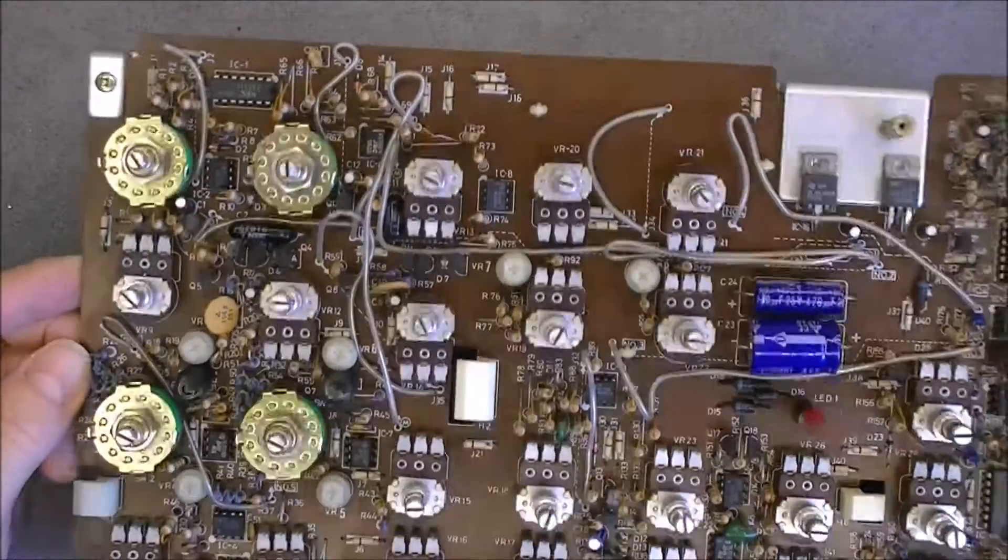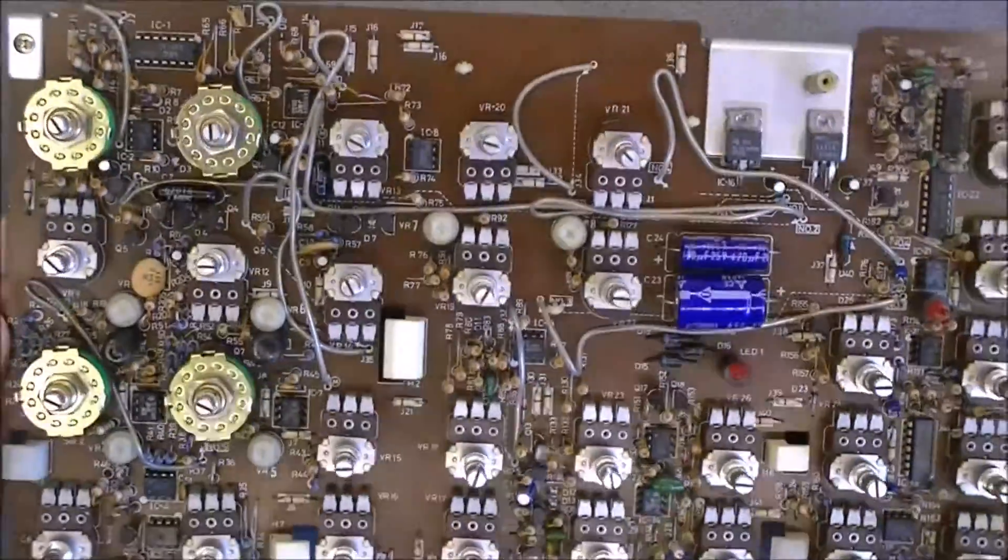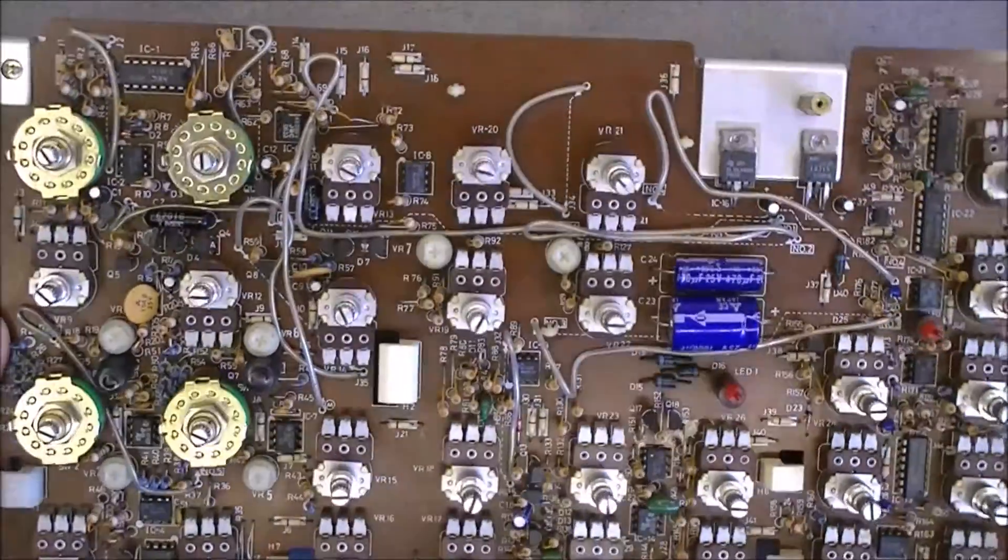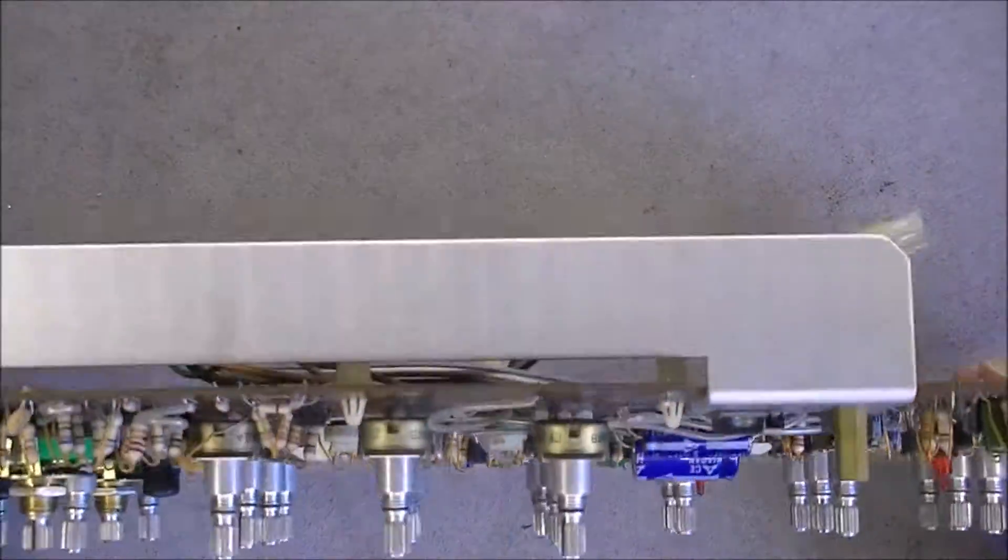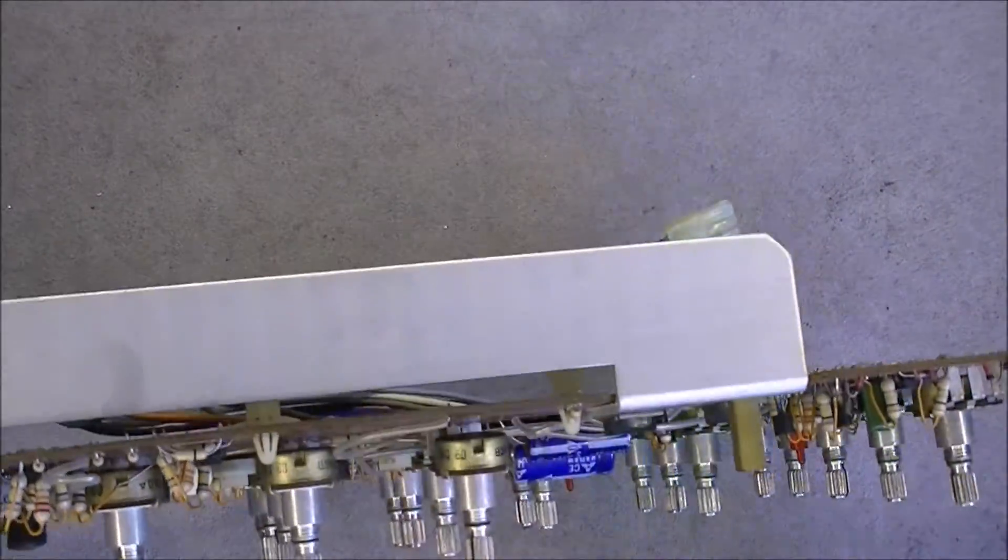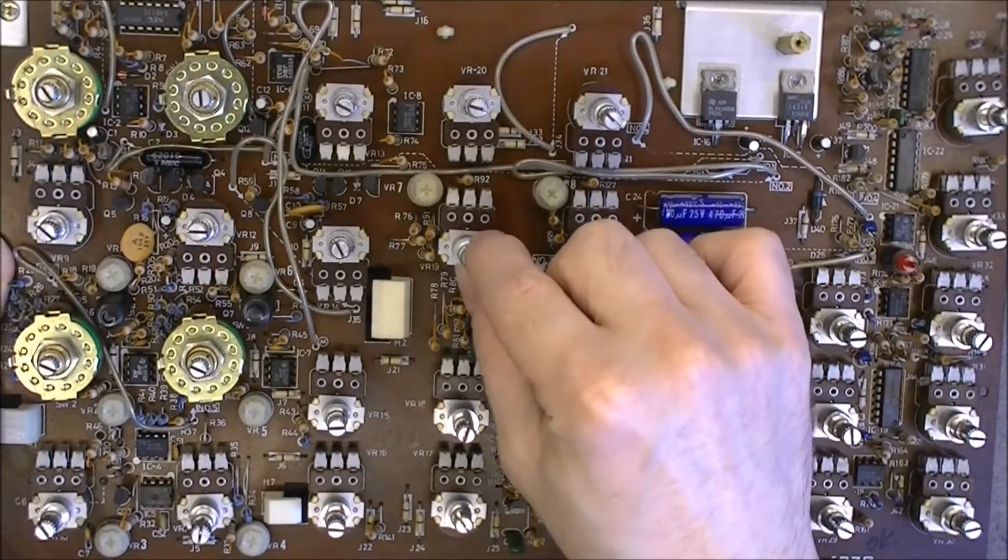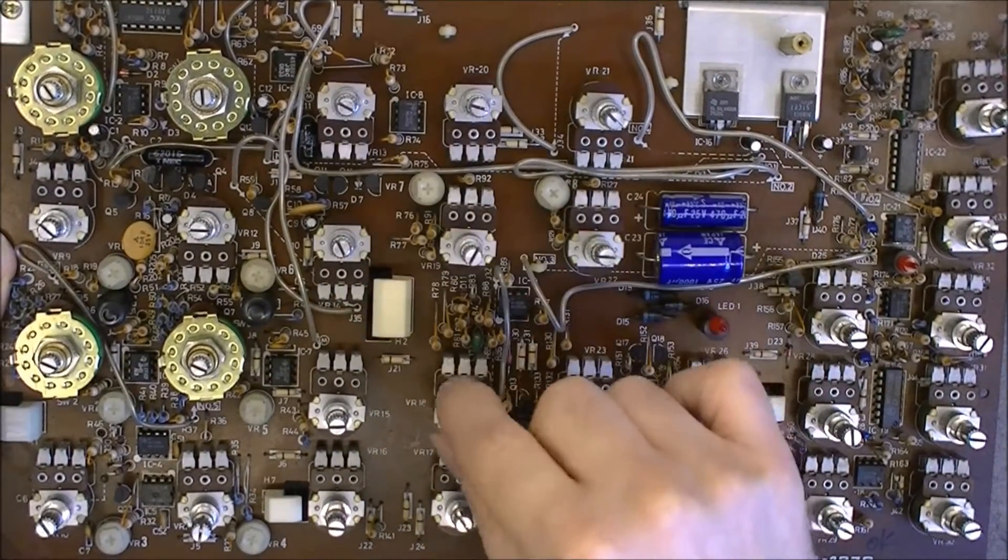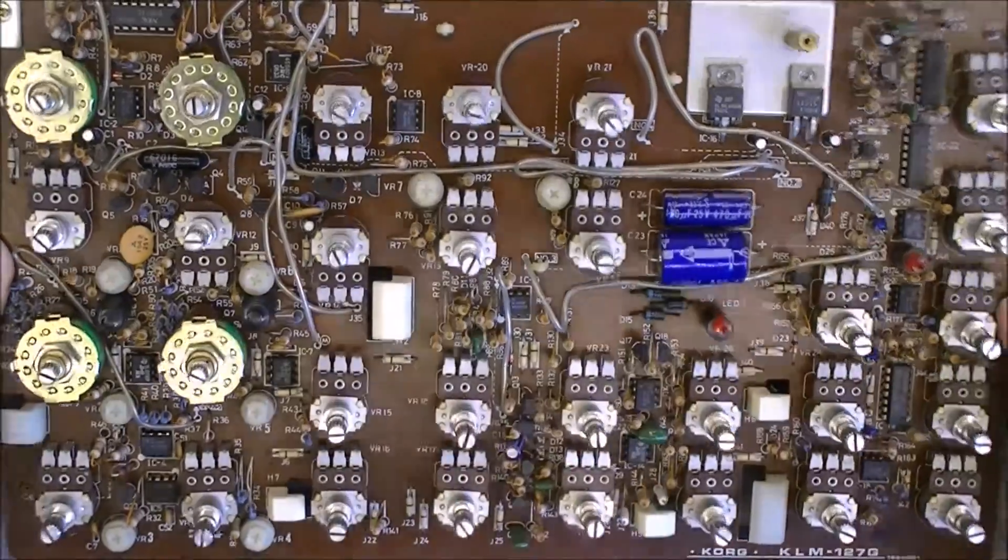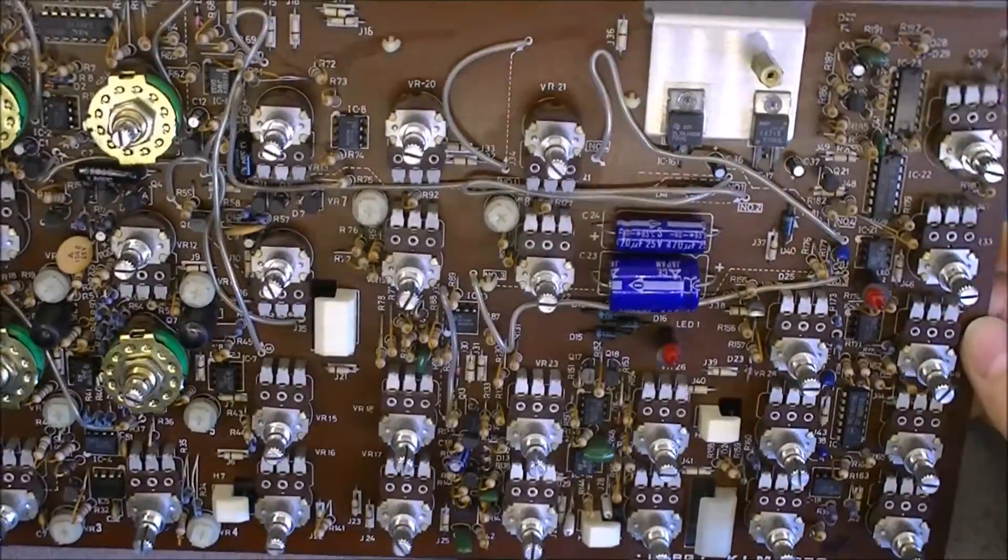The first thing I noticed is it's not easy to reach the holes in the potentiometers to spray contact cleaner, and they're only attached with connections so it's really easy to bend them if you're not careful.